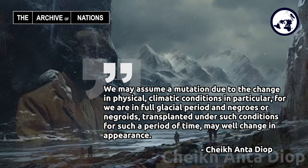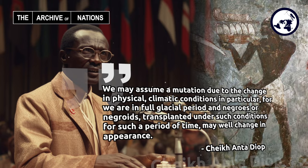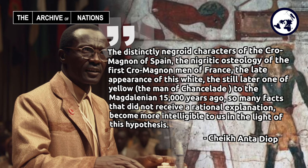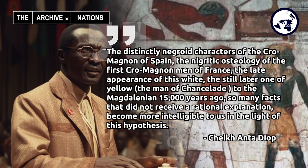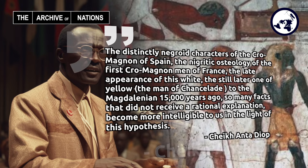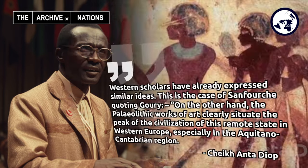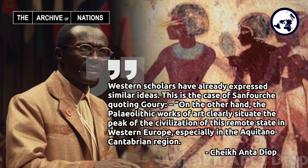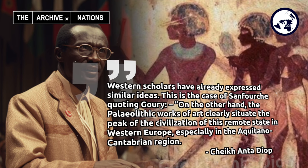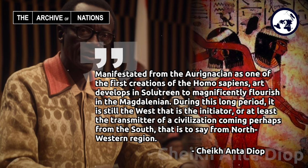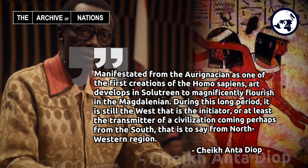We may assume a mutation due to the change in physical and climatic conditions — in particular, for we are in full glacial period — and Negroes or negroids transplanted under such conditions for such a period of time may well change in appearance. The distinctly negroid characters of the Cro-Magnon of Spain, the nigridic osteology of the first Cro-Magnon men of France, the late appearance of this white, the still later one of the yellow — the Man of Chancelade of the Magdalenian, 15,000 years ago — so many facts that did not receive a rational explanation become more intelligible in the light of this hypothesis. Western scholars have already expressed similar ideas.